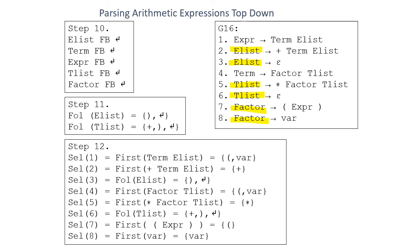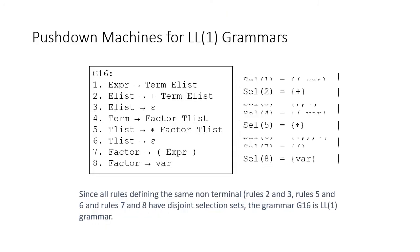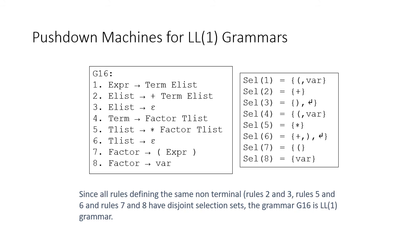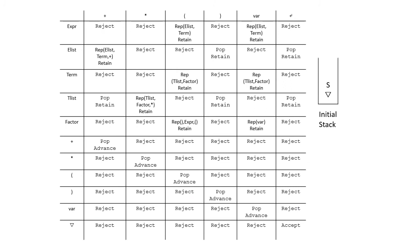Now we check whether this grammar is LL1. Going back to grammar 6, we have rules derived from the same non-terminals: rule 2 and rule 3, rule 5 and rule 6, and rule 7 and rule 8. Rule 2 and rule 3: their selection sets do not overlap — pass. Rule 5 and rule 6: their selection sets also do not overlap — pass. Rule 7 and rule 8: their selection sets also do not overlap. Therefore, grammar 6 is an LL1 grammar and we can use it to do stack parsing using the top-down algorithm.